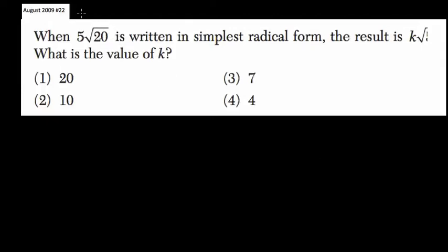Okay, this problem got cut off a bit, but I'll read it. It says, when 5 times the square root of 20 is written in simplest radical form, the result is k times the square root of 5. What is the value of k?